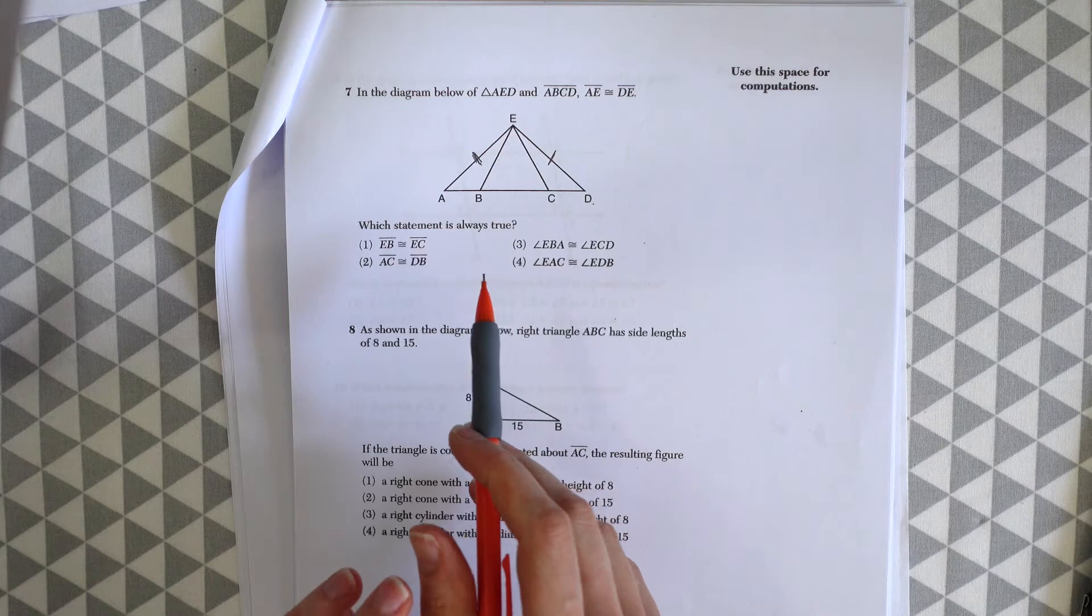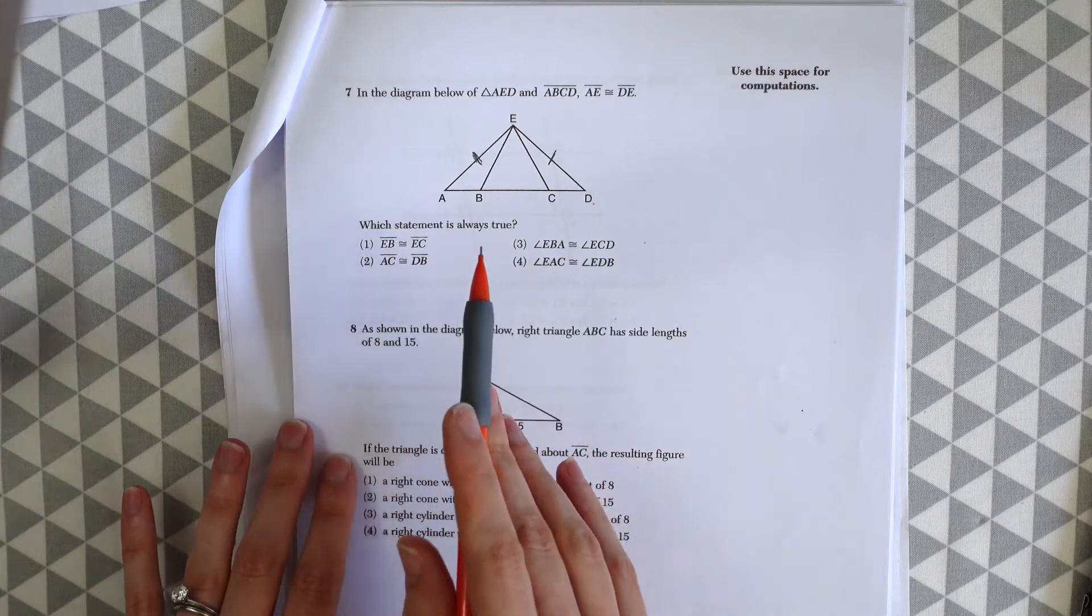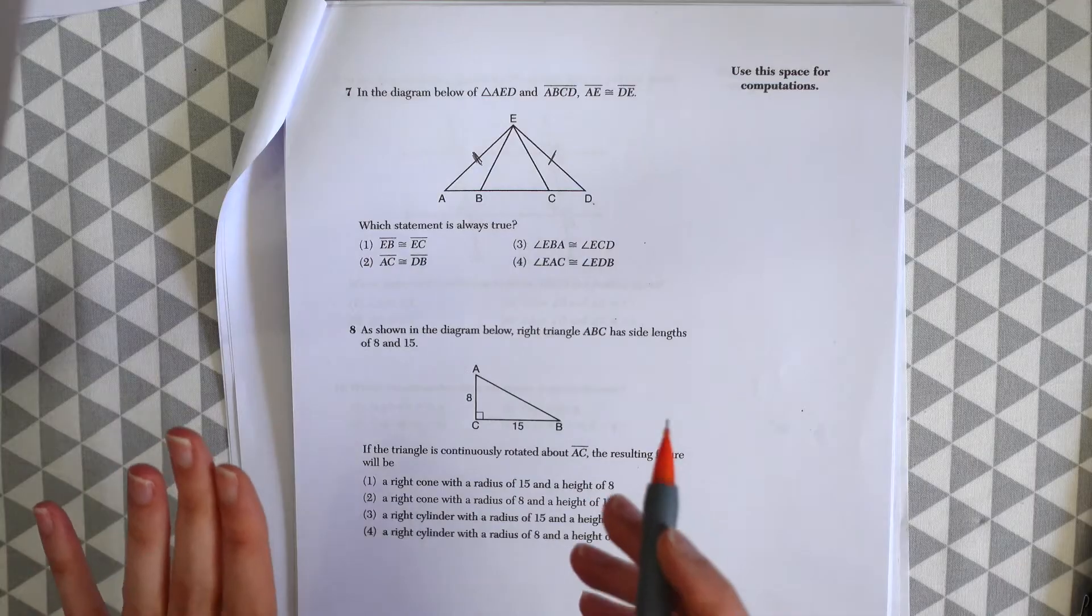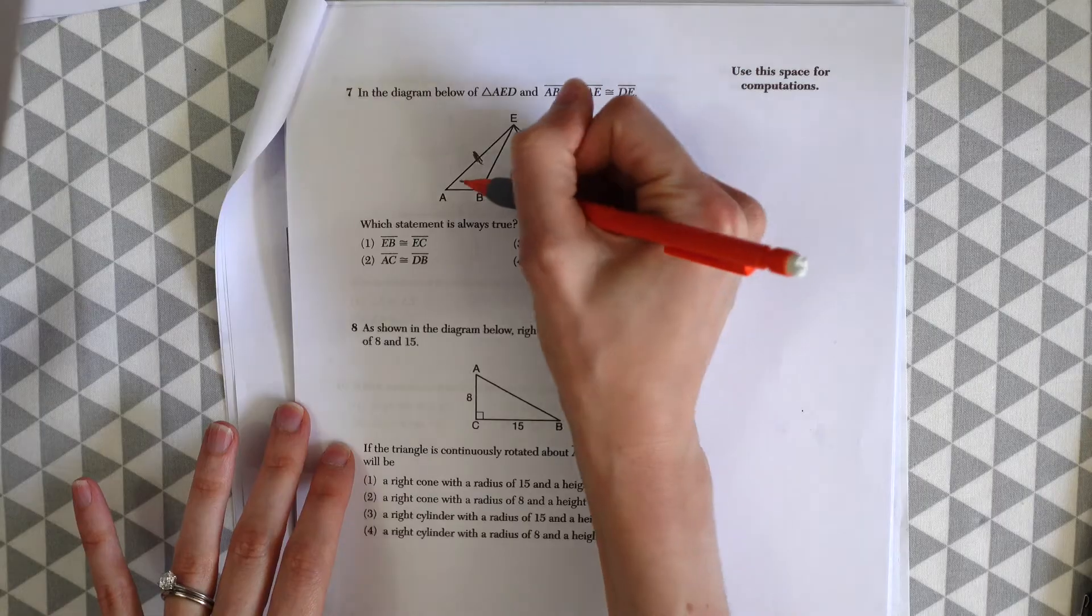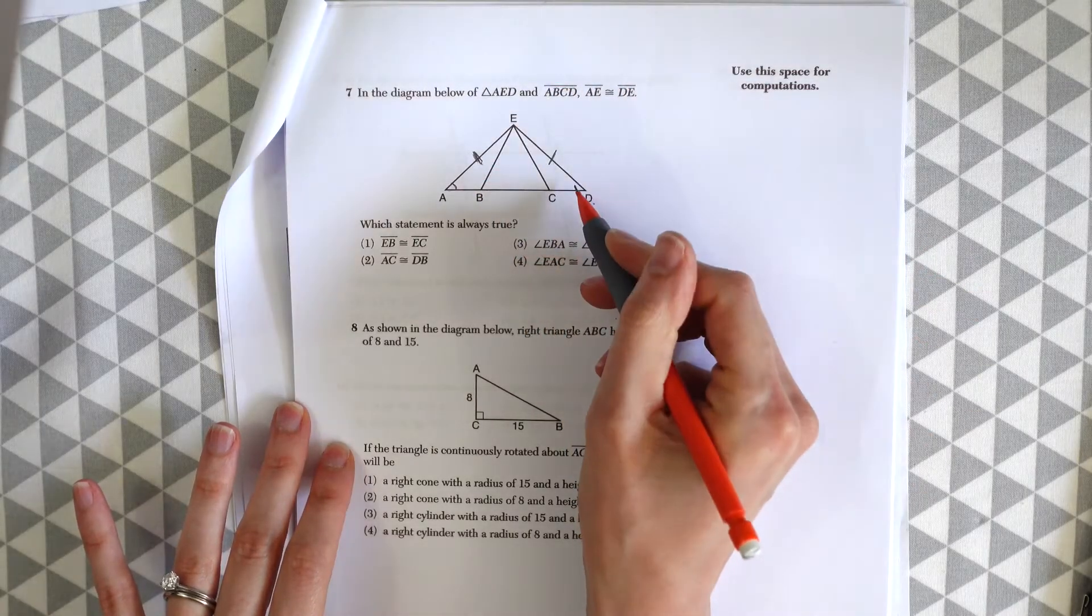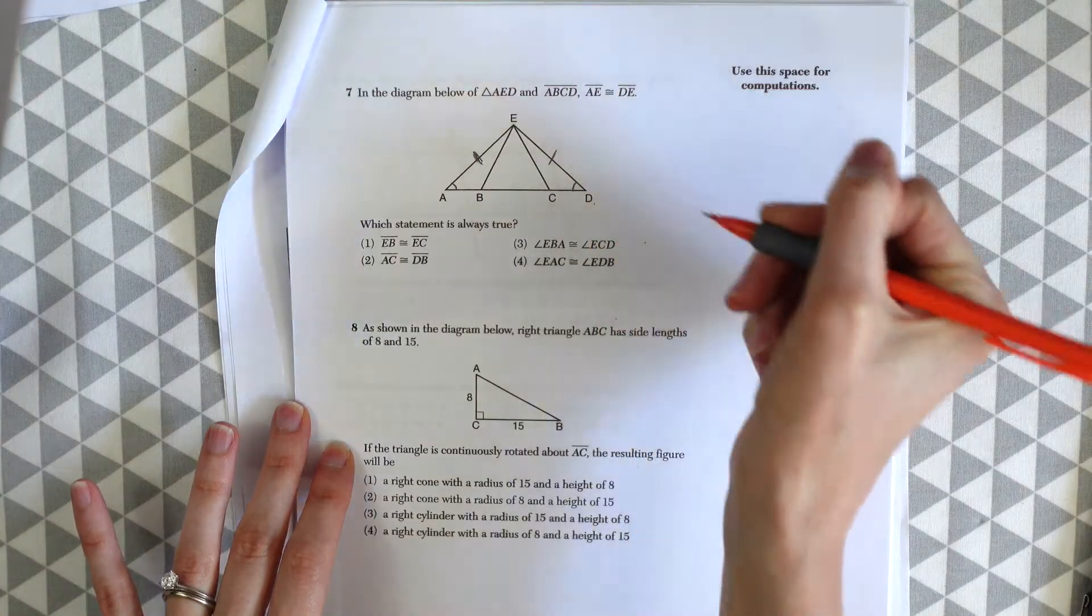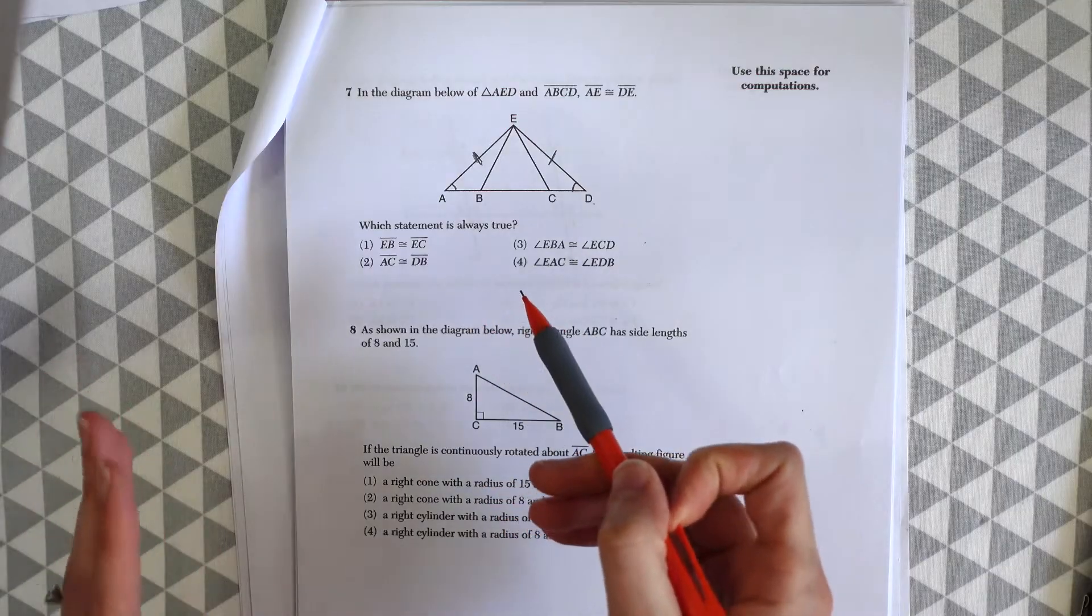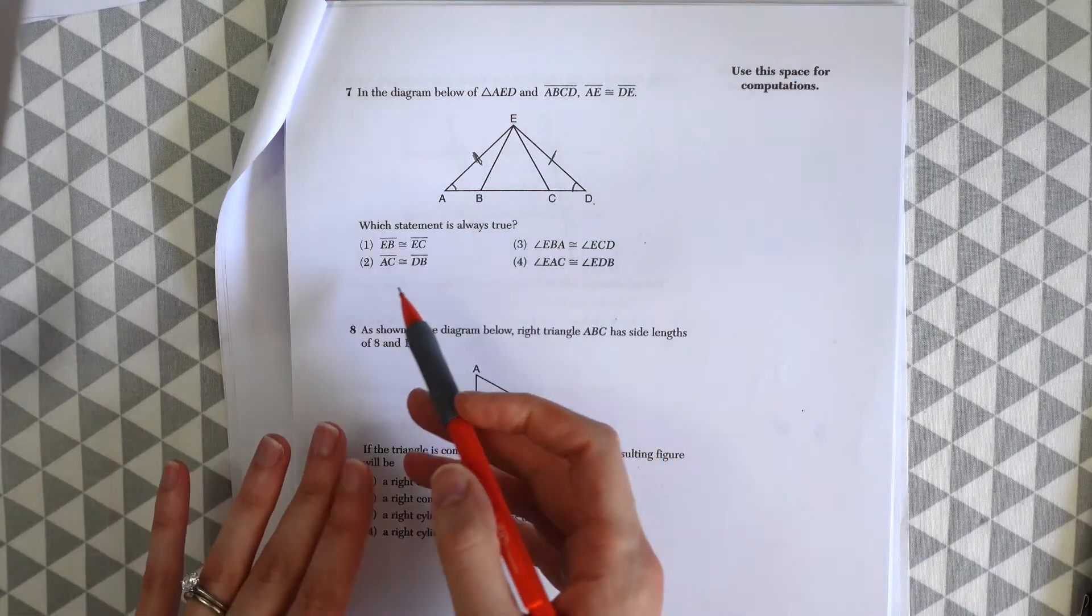So let's see what they're asking us. Which statement is always true? Because this is an isosceles triangle, we know that angle A is going to be equal to angle D. So we just want to look for something that says that. And if we go one by one we'll see why the others don't look right to us.